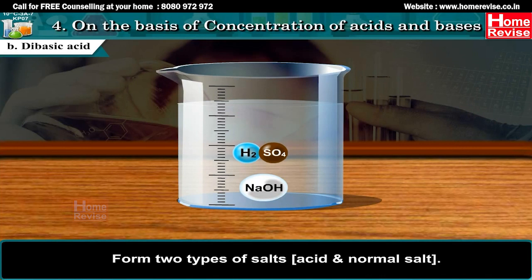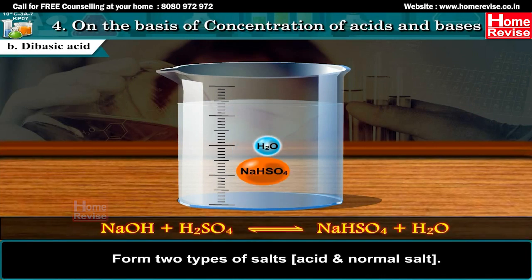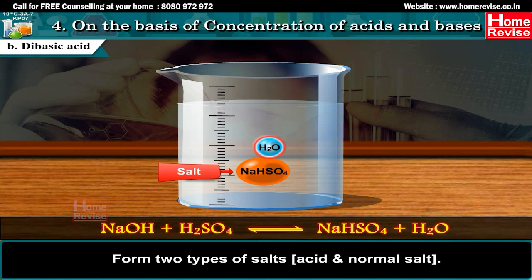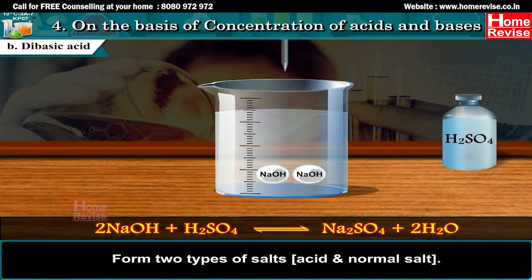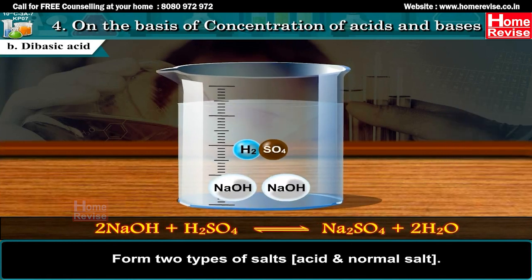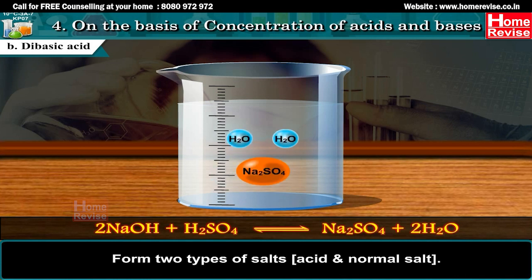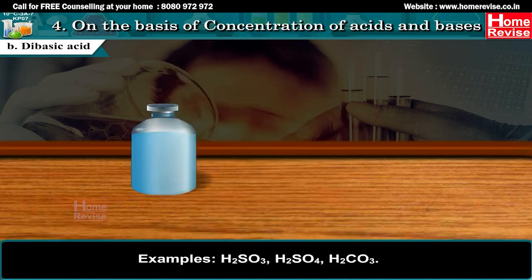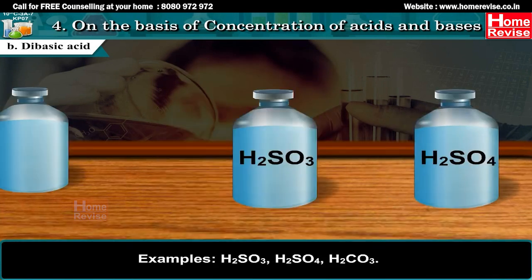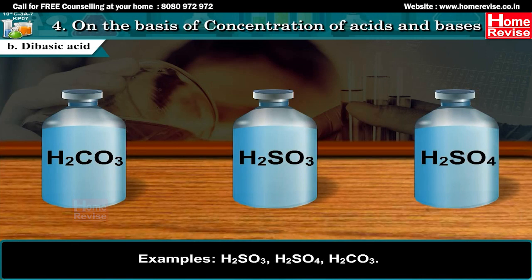Dibasic acids form two types of salts: acid salt and normal salt. Examples of dibasic acids: H2SO3, H2SO4, H2CO3.